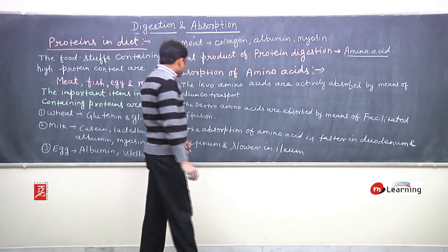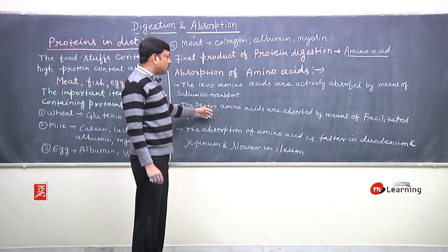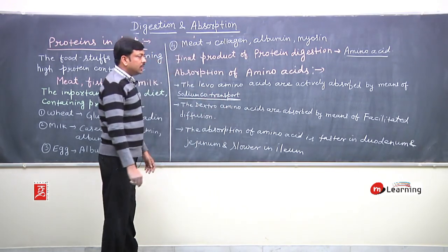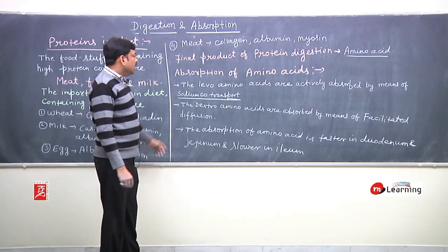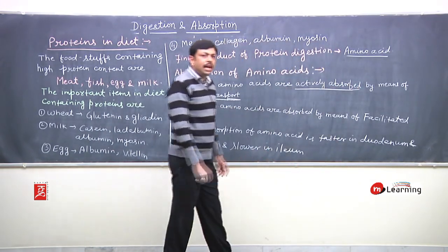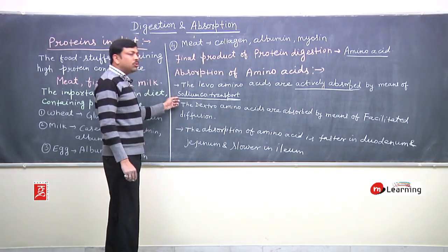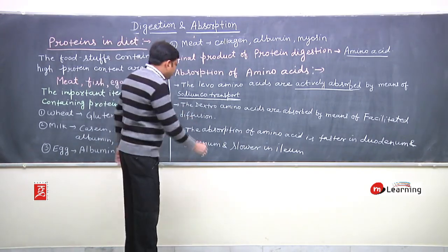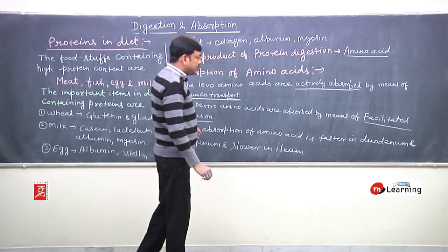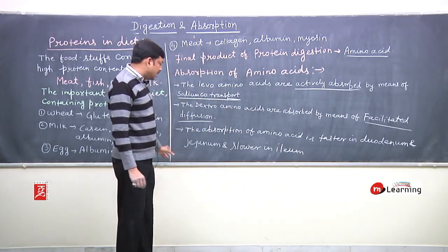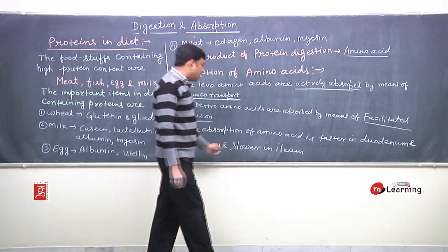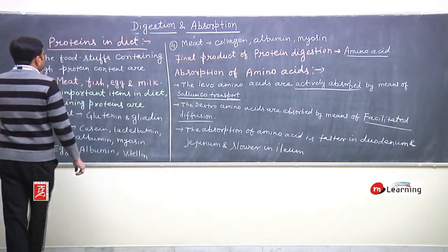Amino acids are of two types: levo amino acids and dextro amino acids. Levo amino acids are actively absorbed by means of sodium co-transport, similar to glucose — energy expenditure occurs. Dextro amino acids are passively absorbed by facilitated diffusion. The maximum absorption of amino acids occurs first in the duodenum and jejunum, and is comparatively slower in the ileum.